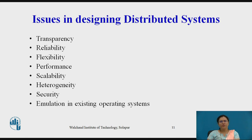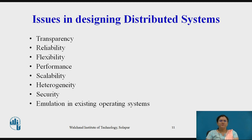Next, we will see the different issues while designing a distributed system: transparency, reliability, flexibility, performance, scalability, heterogeneity, security, and emulation in existing operating systems. These are all the issues. We will see them one by one.